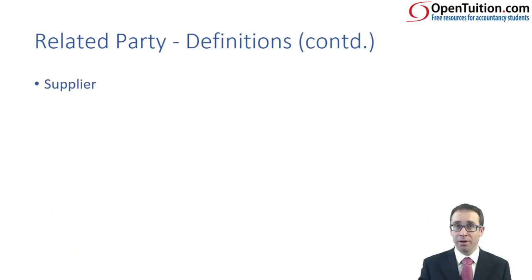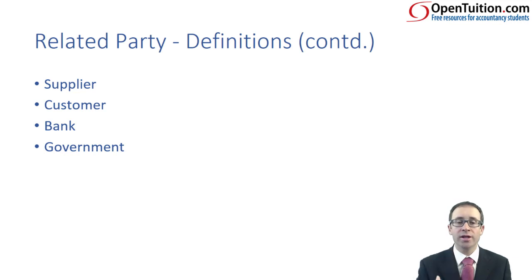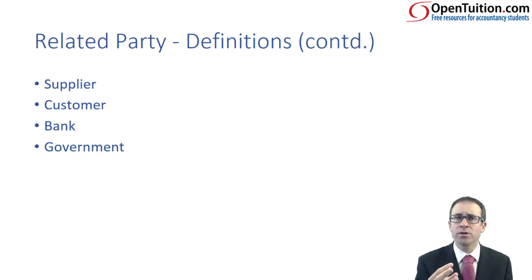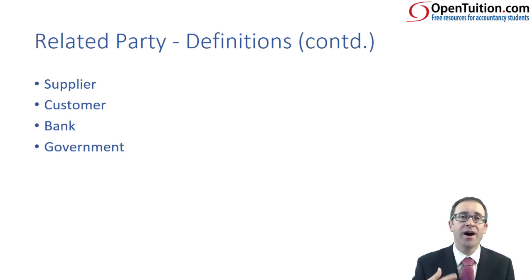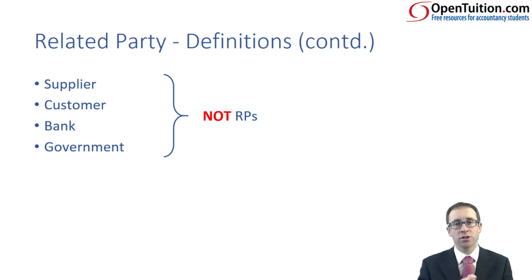Just be careful — if you identify a supplier, a customer, a bank, or the government, they do have influence over the business. The bank can close down your overdraft facility, the government can impose restrictions, and a utility company supplying gas, electricity or water has influence in that it could cut off your supply. But they don't have influence from an ownership perspective — there's no power to participate in the operating and financing decisions. Therefore they are not related parties, and no disclosure is required for anything that happens with your suppliers, customers, bank, government, or utility companies.